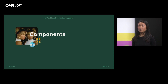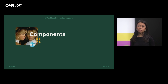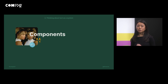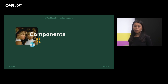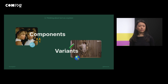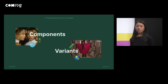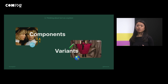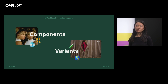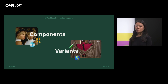Thinking about how we use text in product pointed us towards two core concepts for systemizing text that informed how we wanted to build Ditto. The first is components — codifying repetition, thinking about text as building blocks, and enforcing consistency. The second is variance — codifying relationships, being explicit about user context, and thinking about text as part of an entire user experience. With these two concepts — components and variance — in mind, we set off to build something to help teams systemize their text.